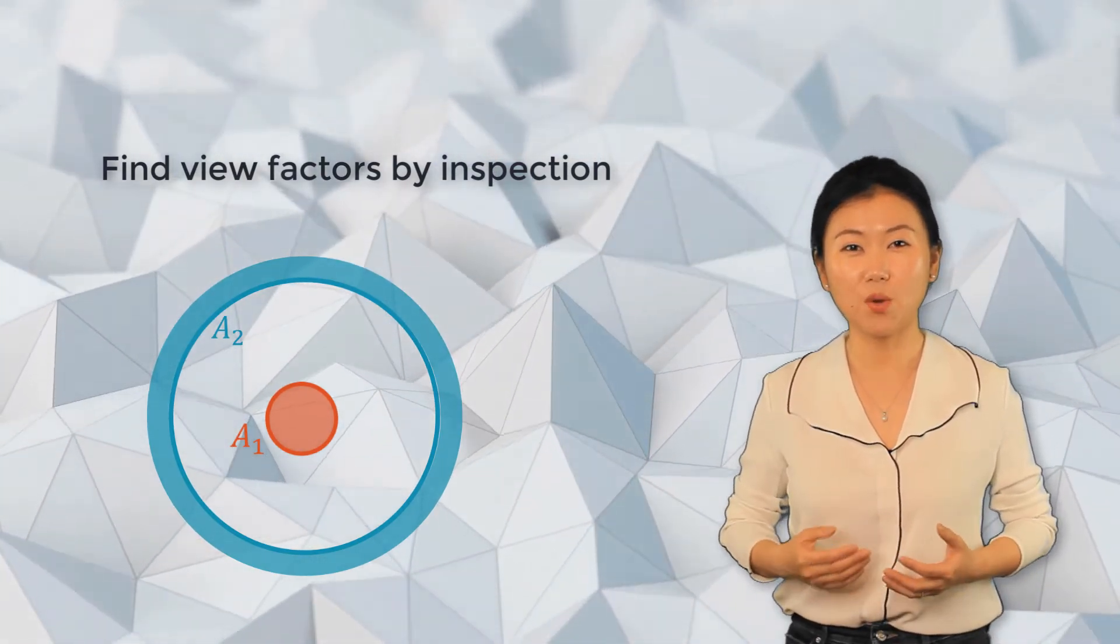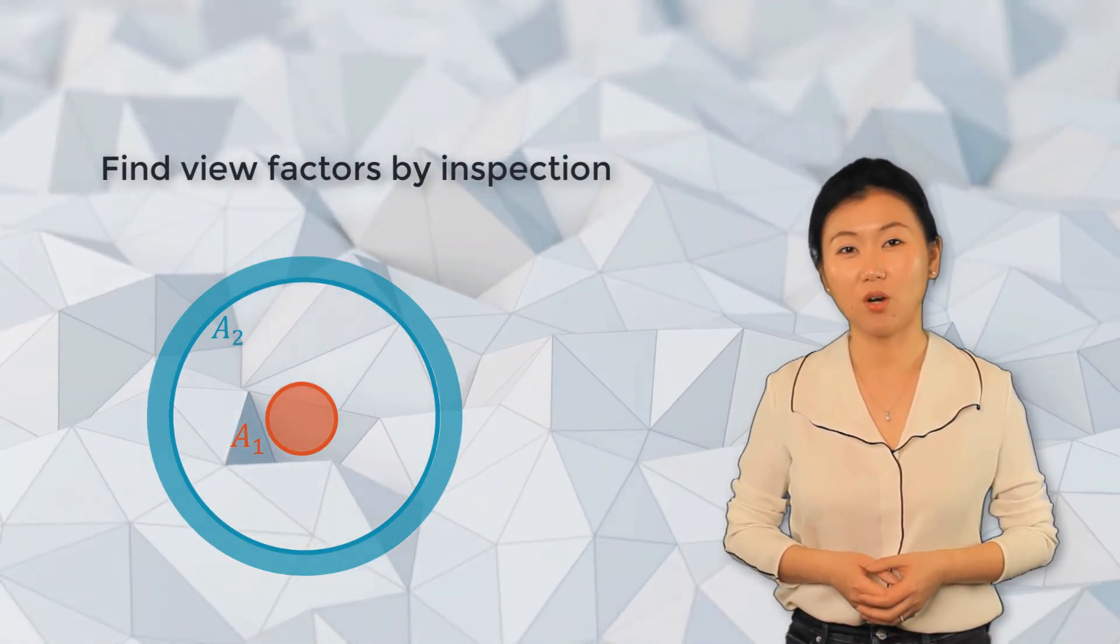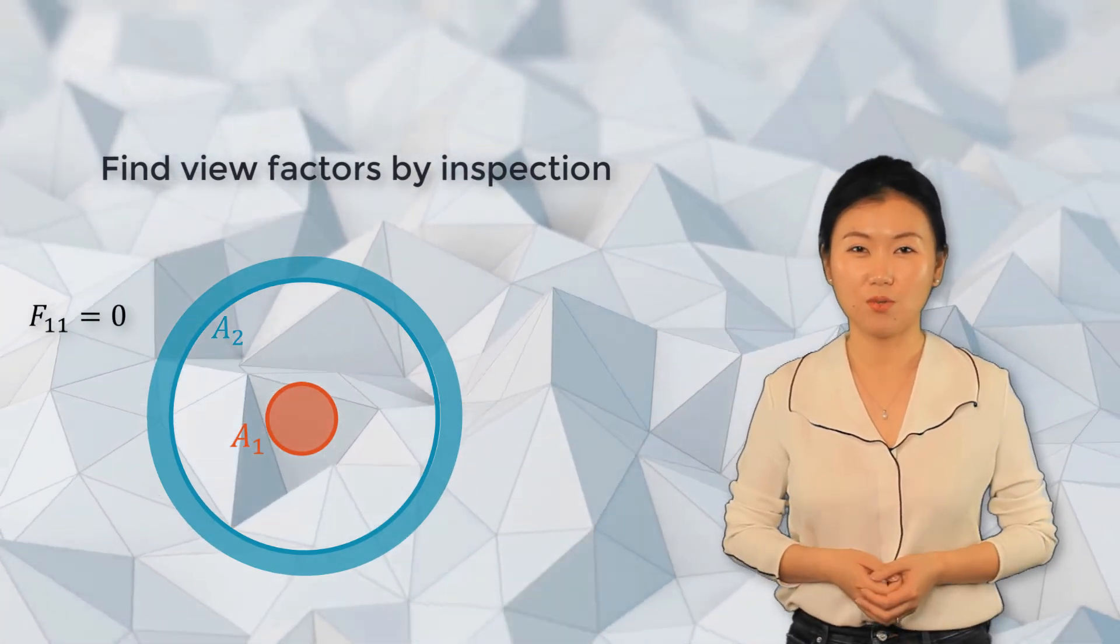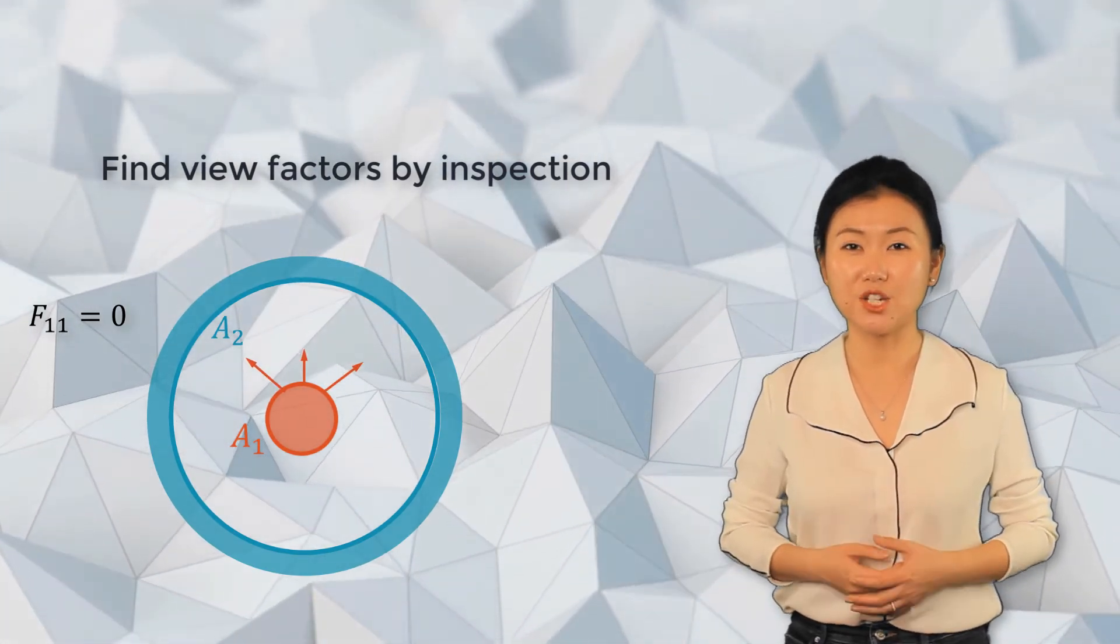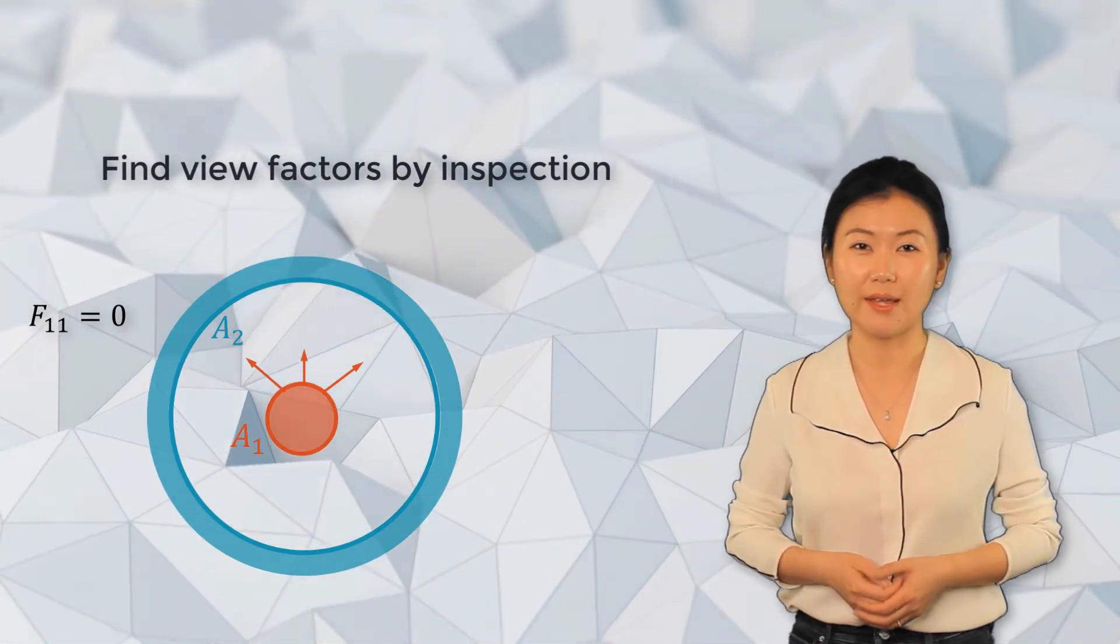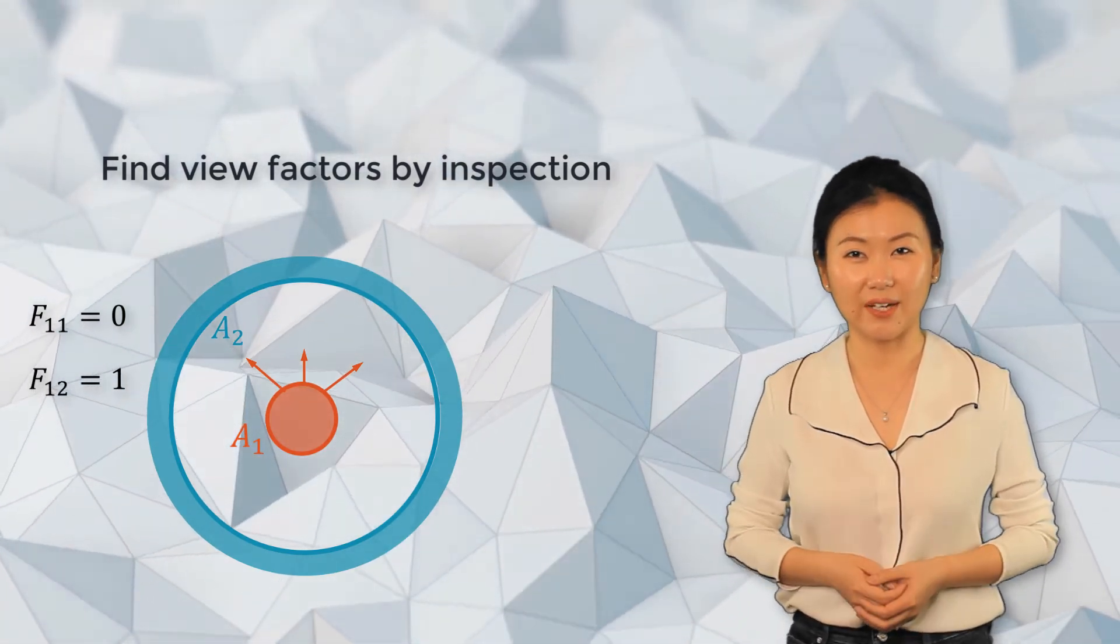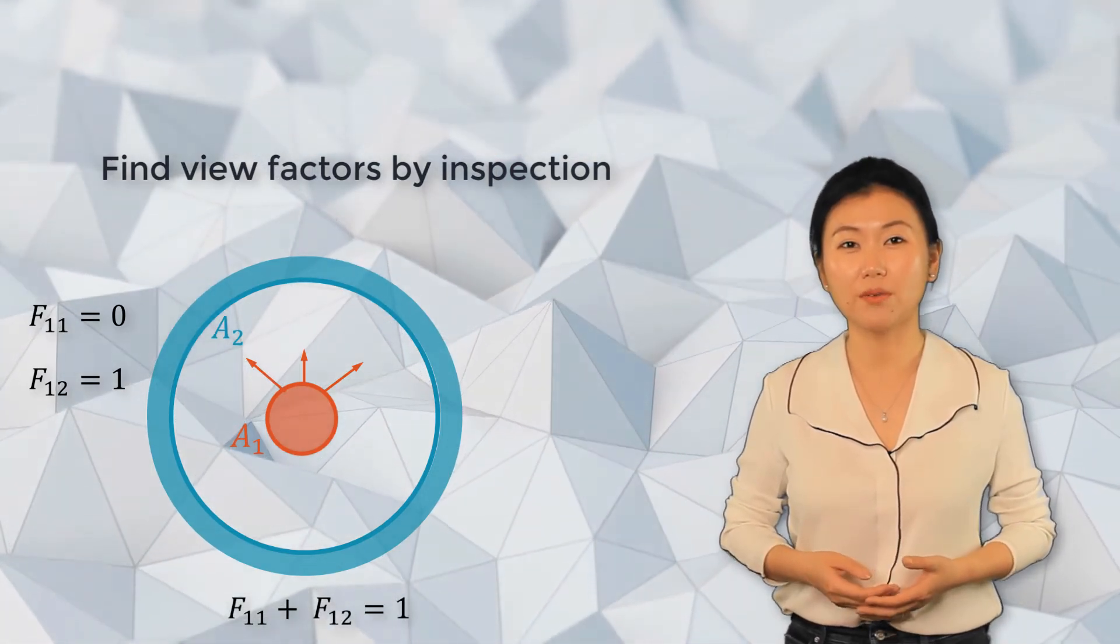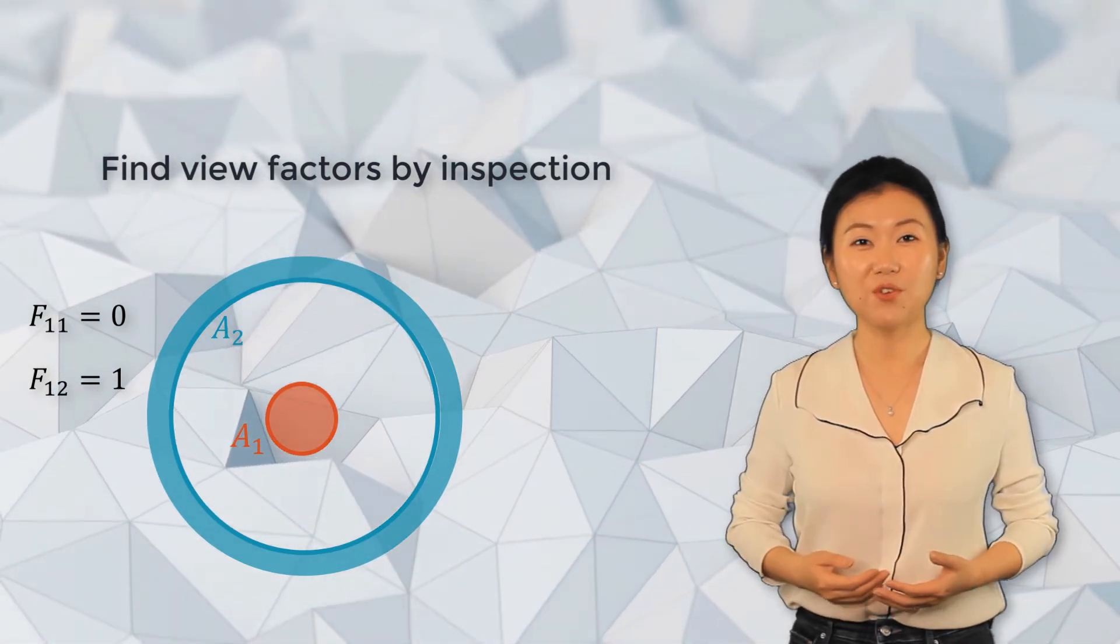Let's first decide what surface one can see. Surface one is a convex surface. As we mentioned before, a convex surface cannot see itself, so F11 is zero. So what can surface one see then? It surely can see surface two, and by inspection we can say that surface one can fully and only see surface two. This means that F12 is equal to one. Since it's a perfect enclosure, we can verify the summation rule here. The view factors from surface one indeed add up to unity.